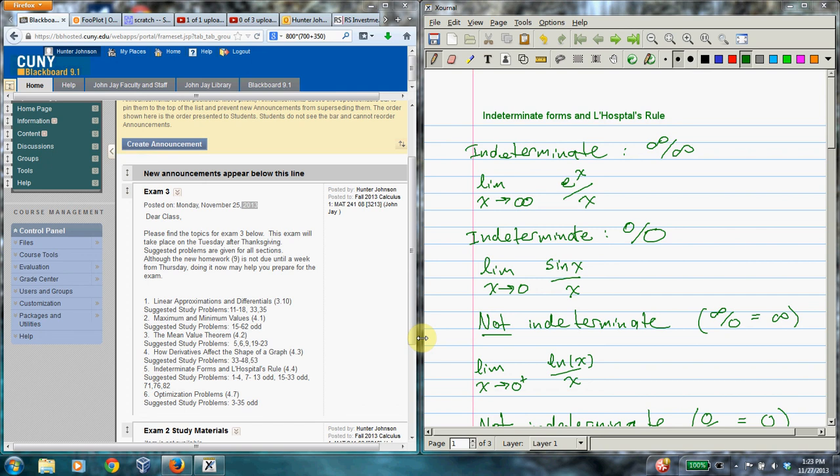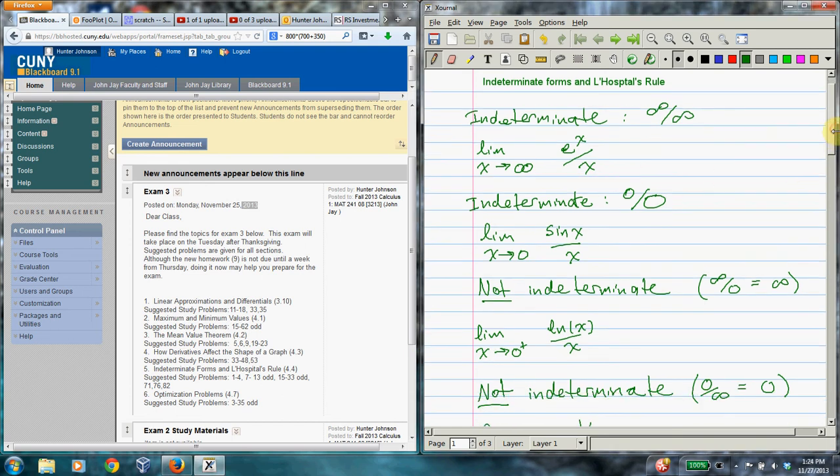This video is about indeterminate forms and L'Hopital's Rule. L'Hopital's Rule is a tool for evaluating a certain kind of hard limit, and it only applies to limits that are of so-called indeterminate form. The two possible indeterminate forms are infinity over infinity and 0 over 0.